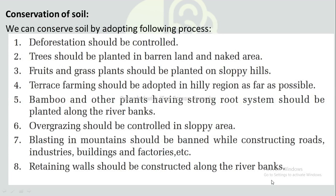Conservation of soil: We can conserve soil by the following methods. Deforestation should be controlled. Trees should be planted in barren and naked areas. Fruits, grass, and trees should be planted on sloppy hills.